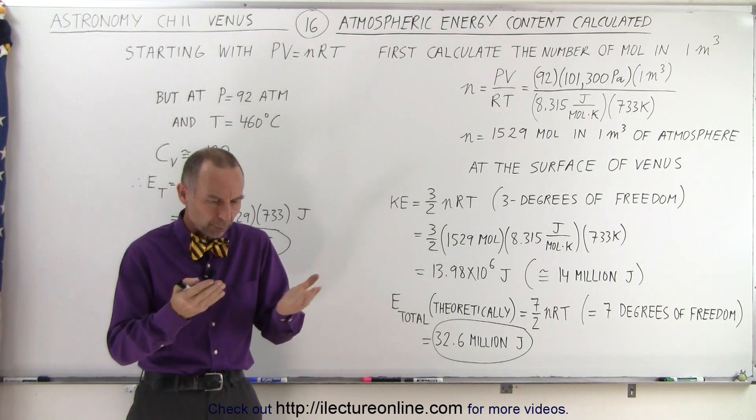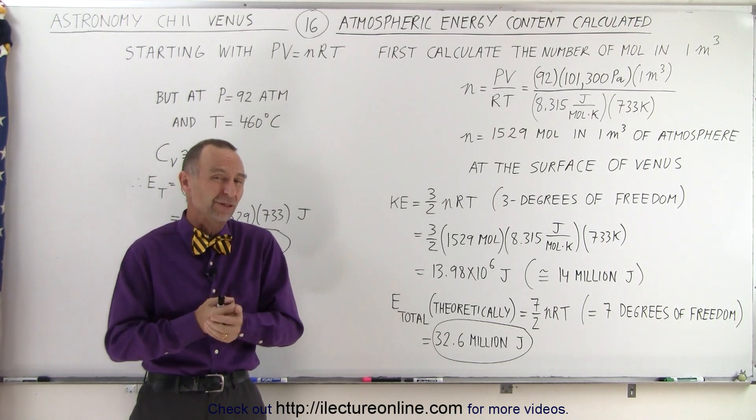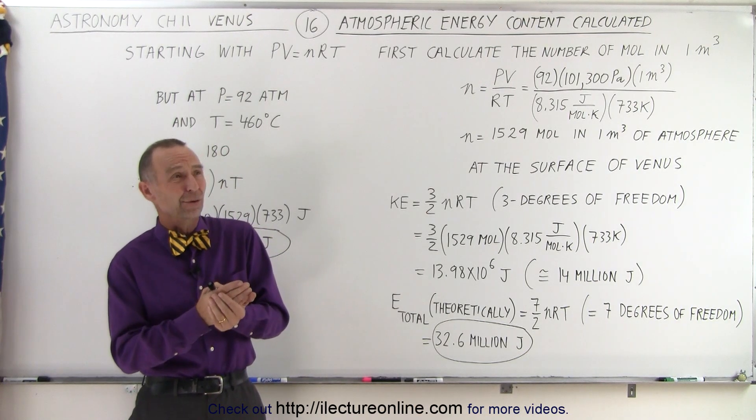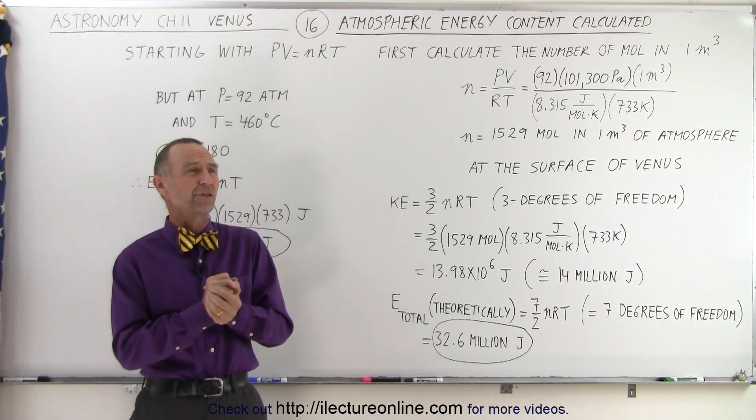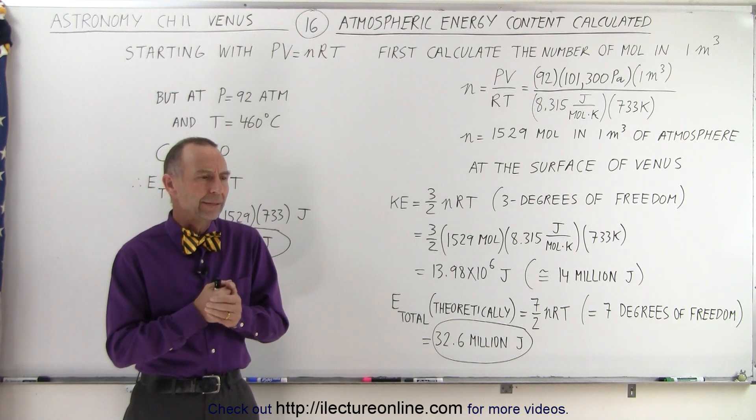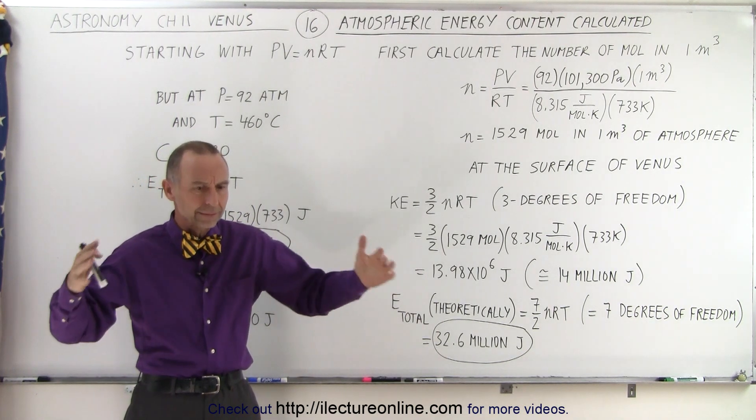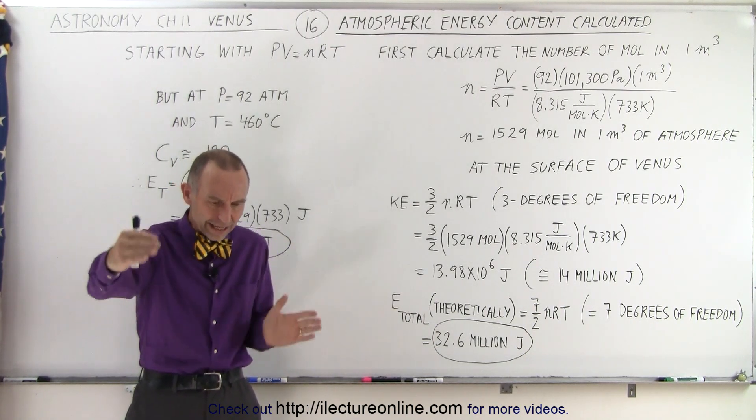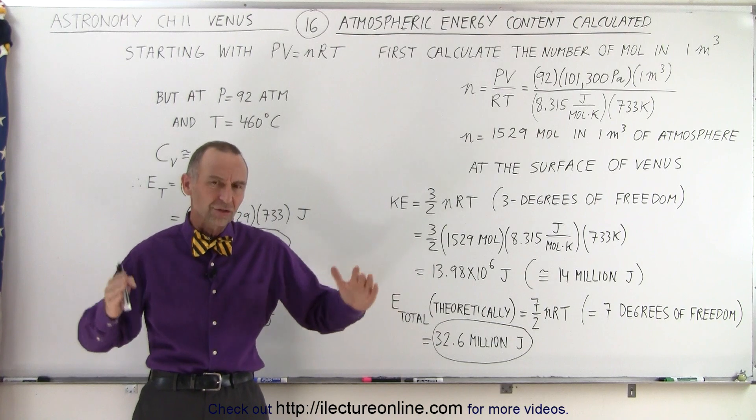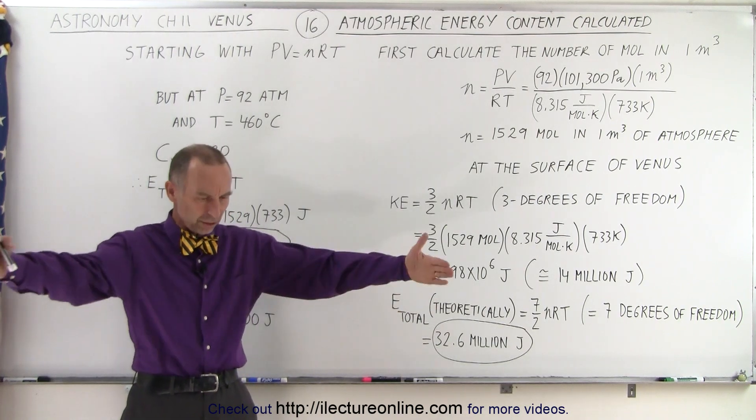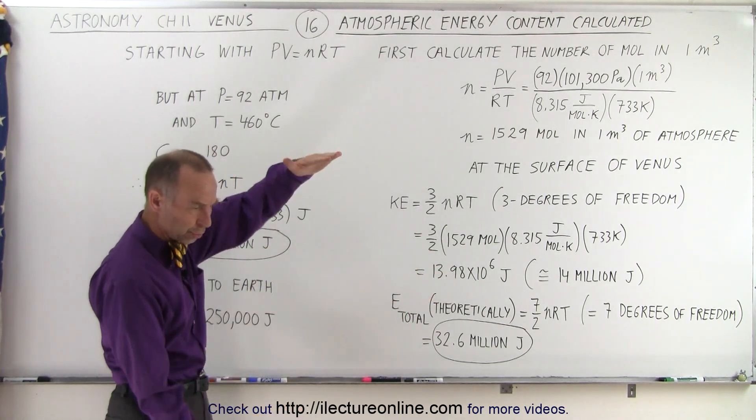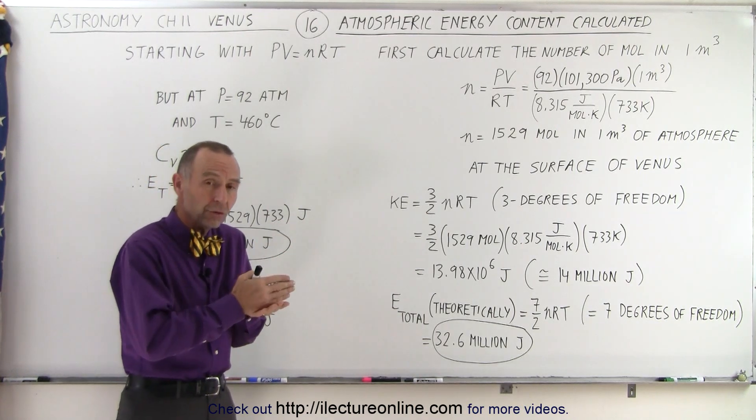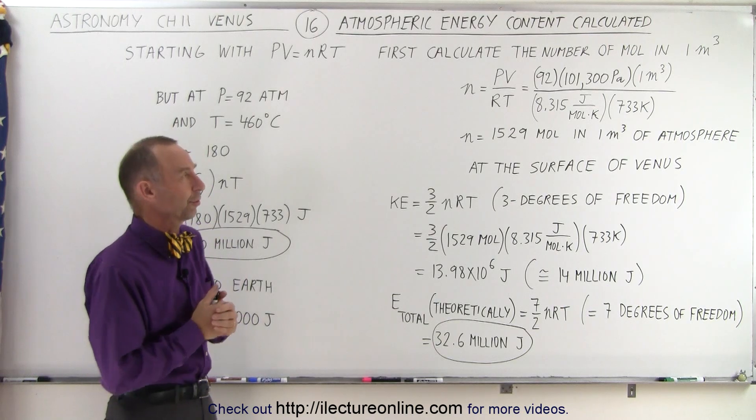So on the surface, the pressure is about 92 atmospheres, about 92 bars. The temperature, about 733 Kelvin, which is about 460 degrees centigrade. There's a lot of atmosphere there. So let's try to calculate how much energy is contained within one cubic meter on the surface of Venus and compare that to the energy that the Earth's atmosphere has in one cubic meter at the surface.